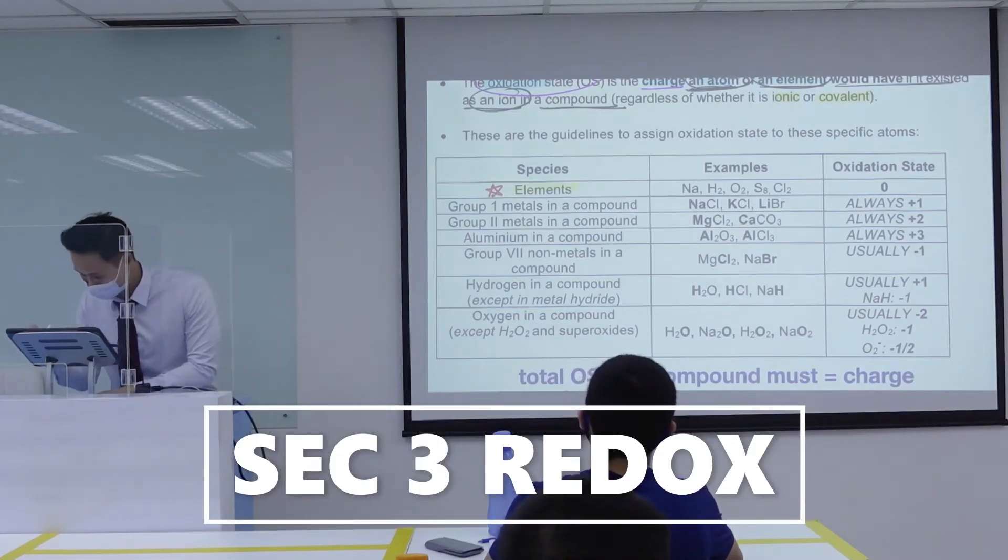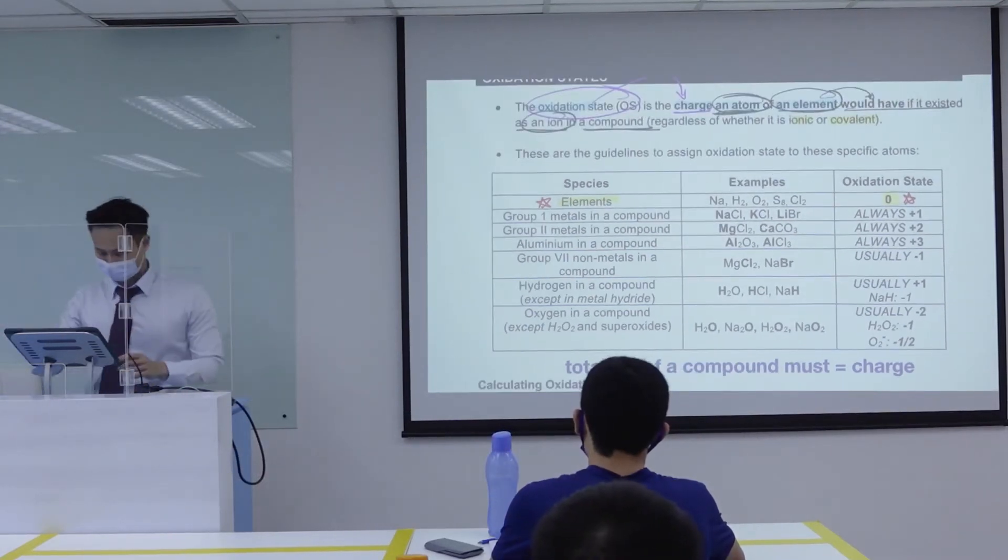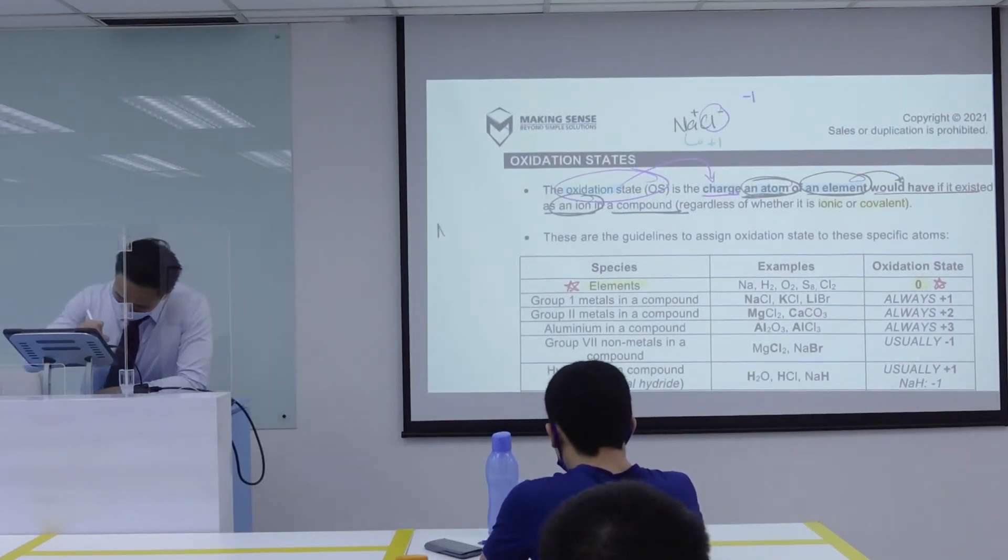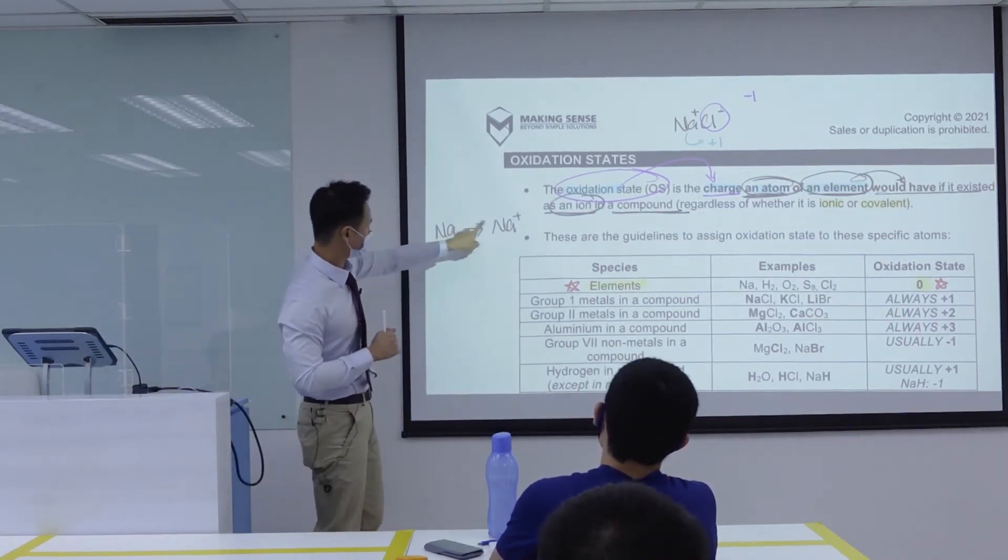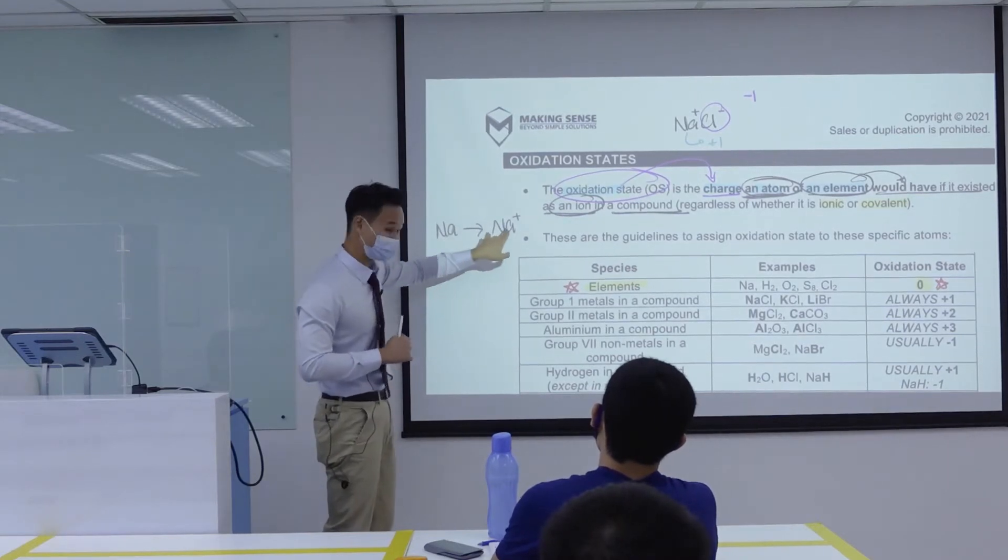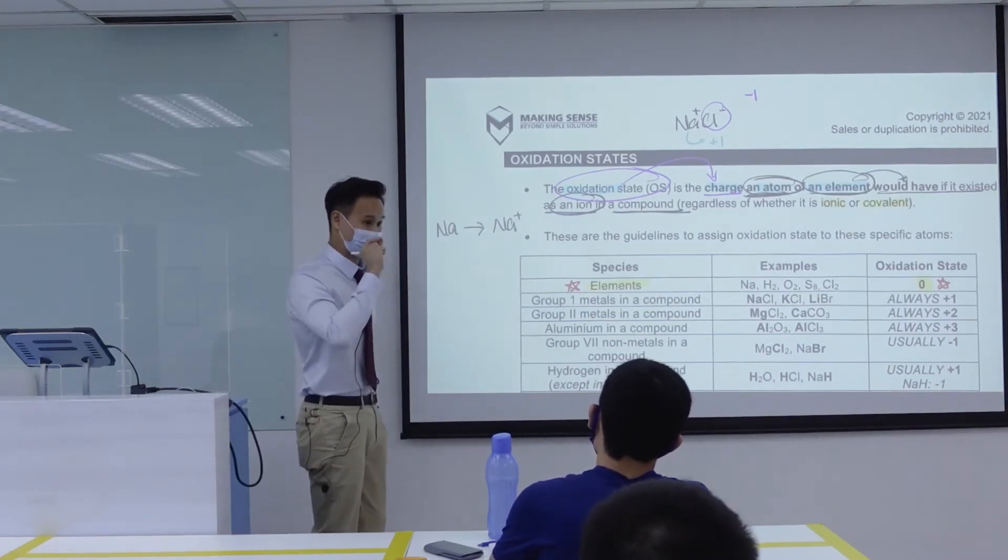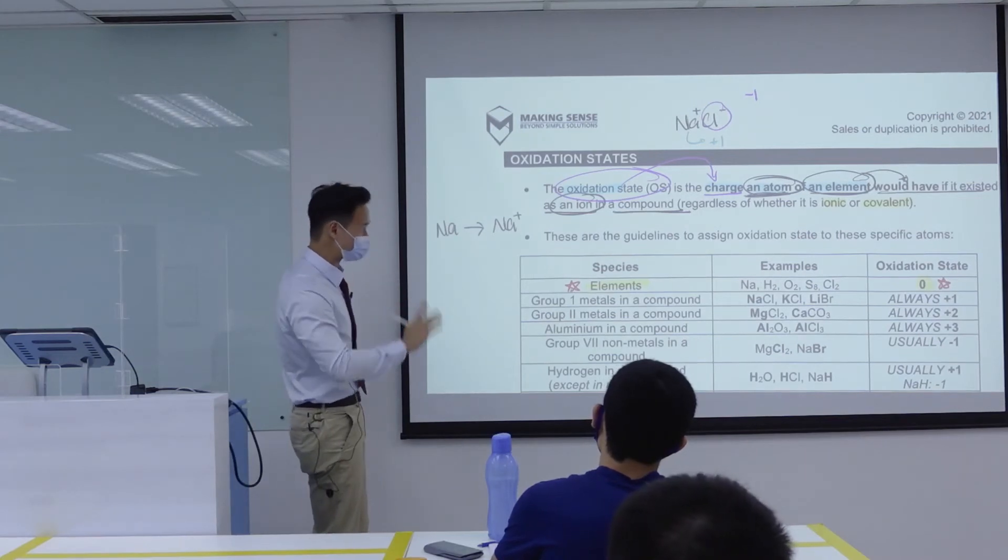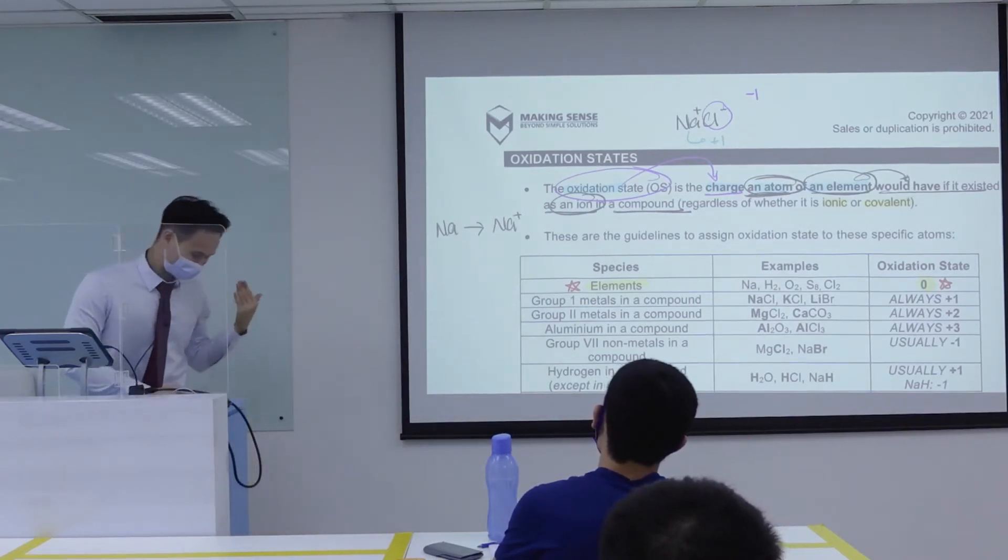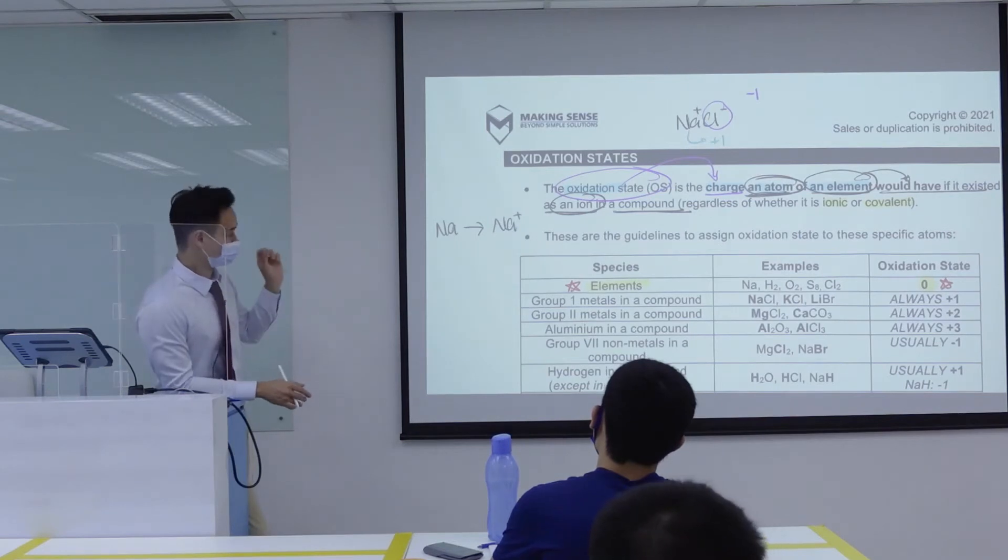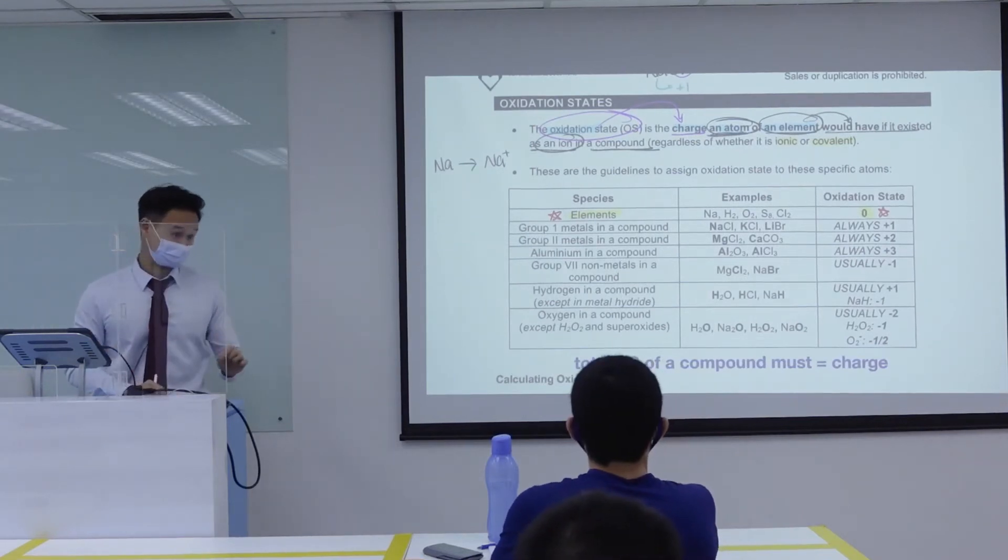Now for elements, the oxidation state is always zero. Extremely important. Now immediately you can tell me this. Which means if I'm going from Na to Na+, zero oxidation state because it's elemental form, plus one oxidation state - increase in oxidation state, oxidation. Using oxidation state to determine oxidation or reduction is the best and most powerful method. You ask any chemist, they will explain whether oxidation or reduction depending on the oxidation state. Oxidation state is your most powerful guide to determine whether something is oxidized or reduced. Every single exam paper will test your oxidation state. You cannot run.